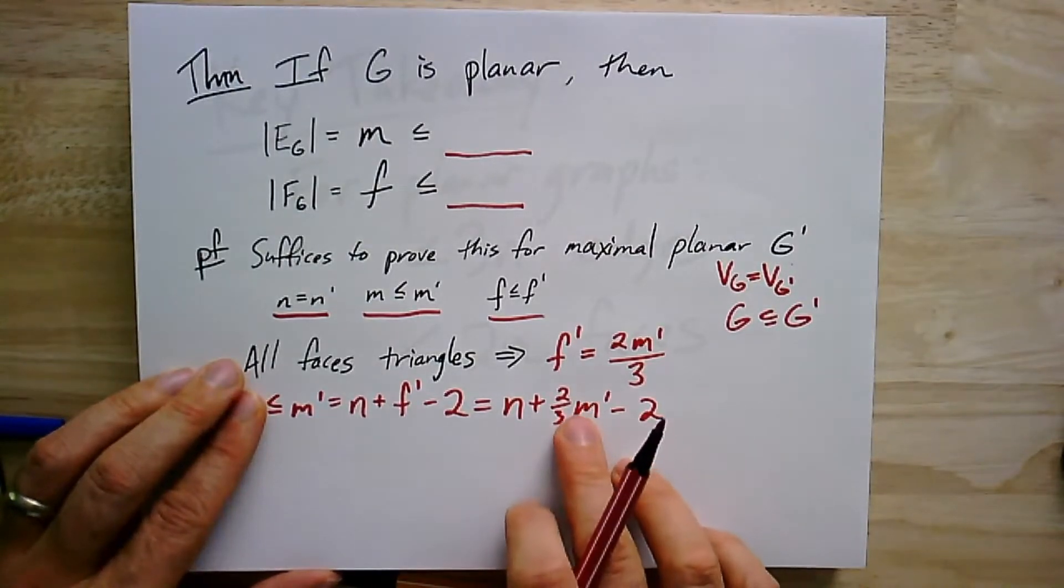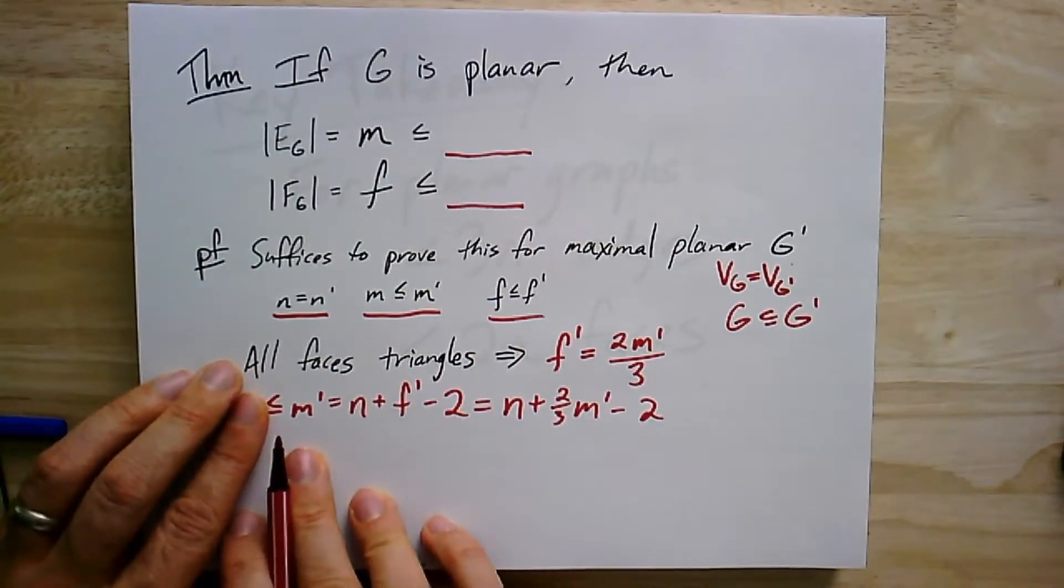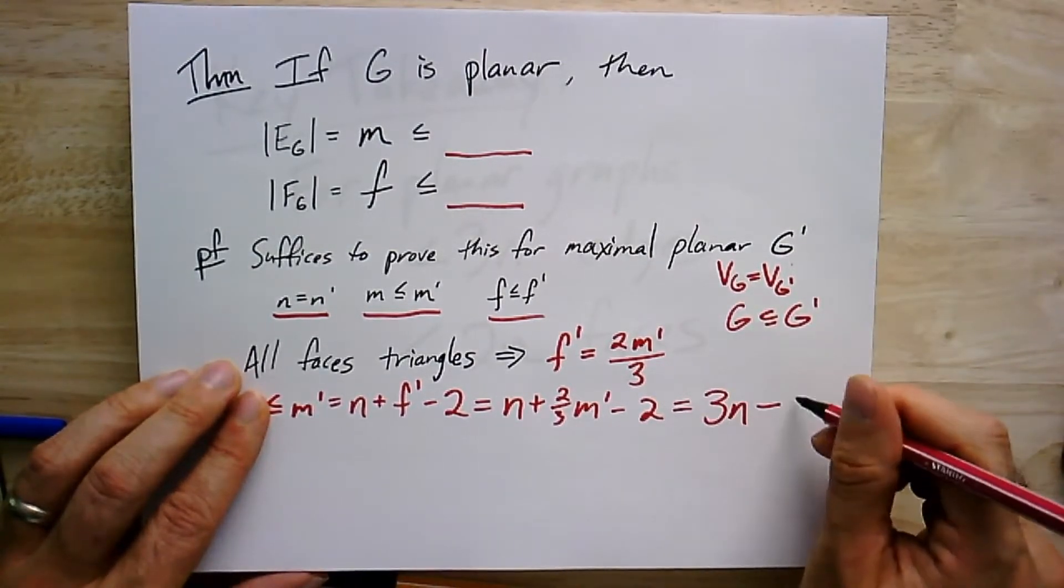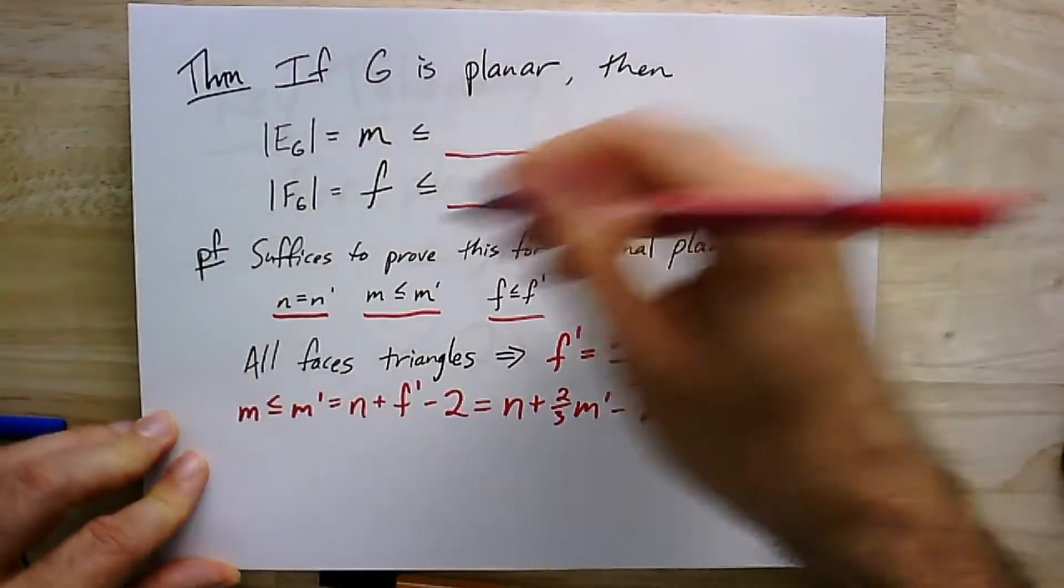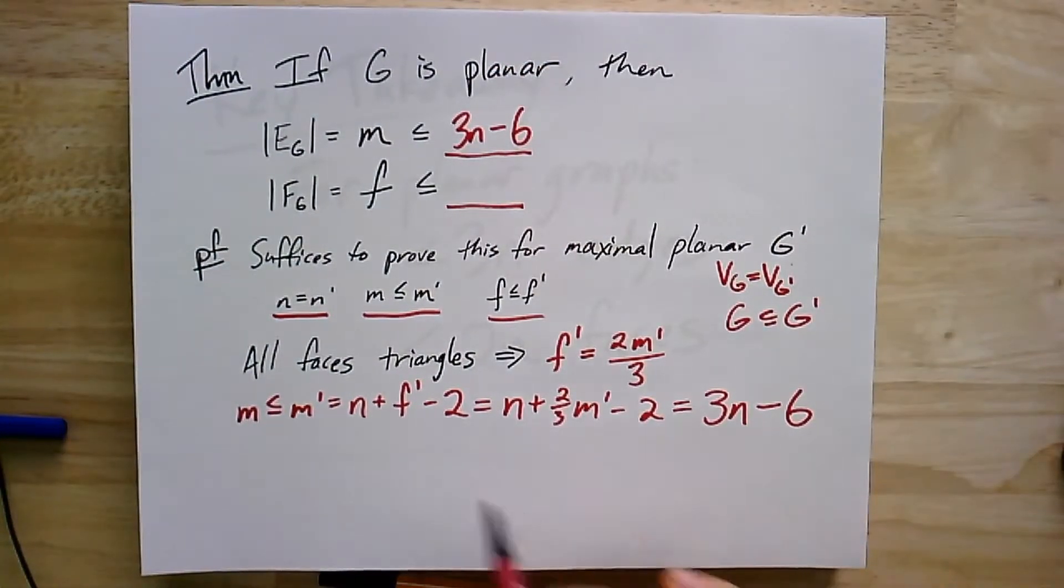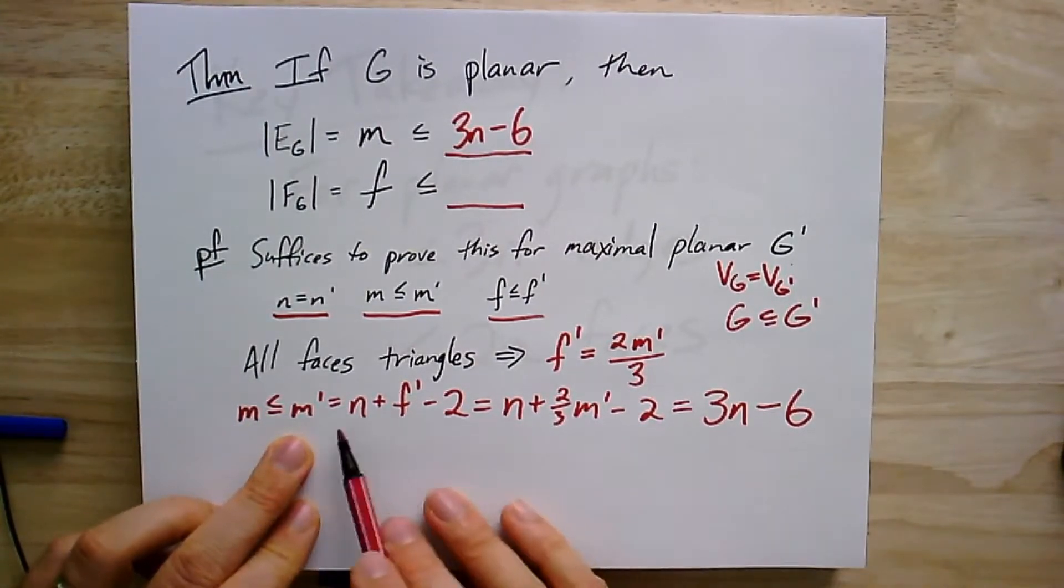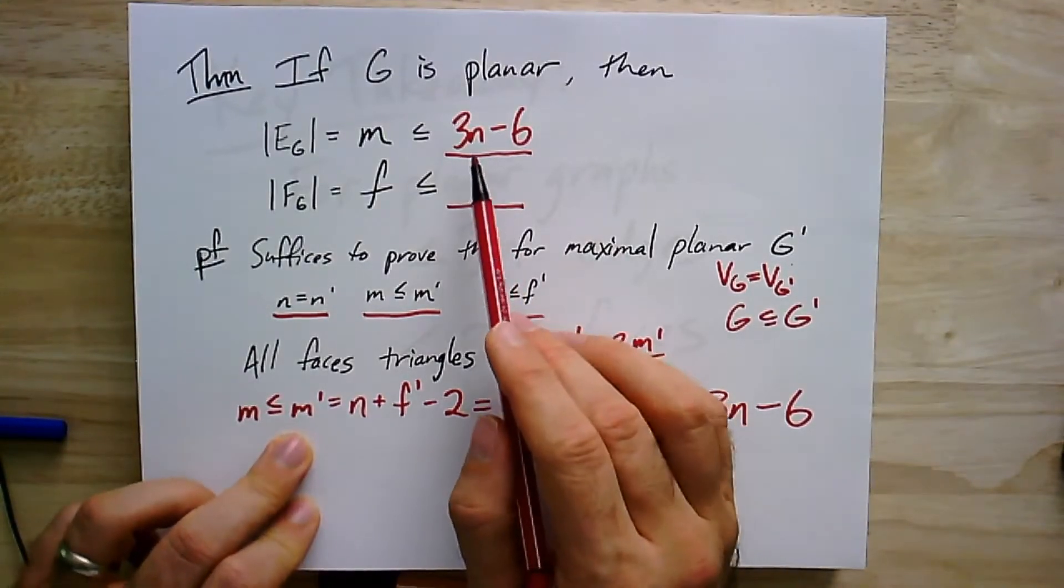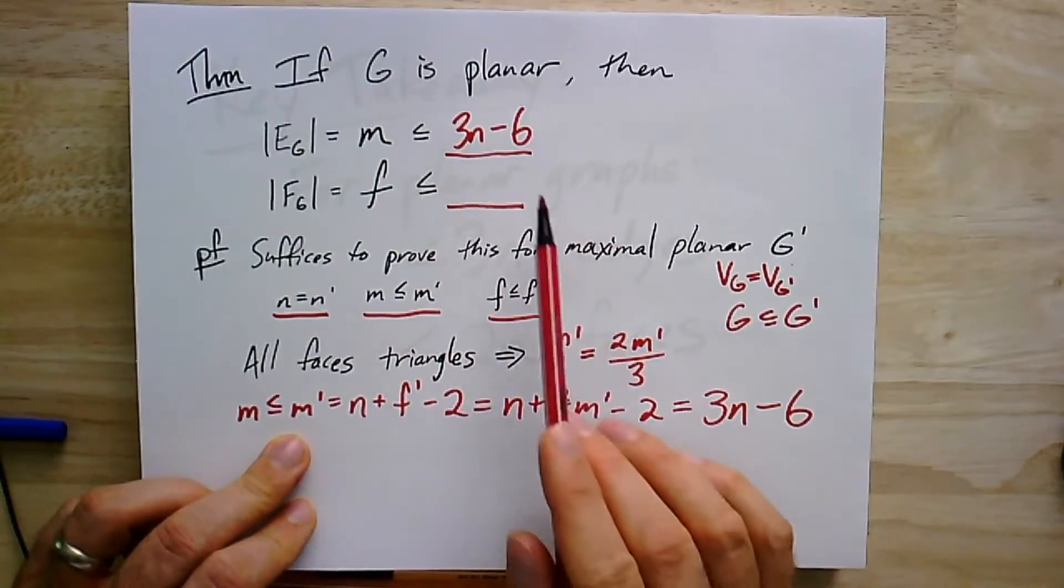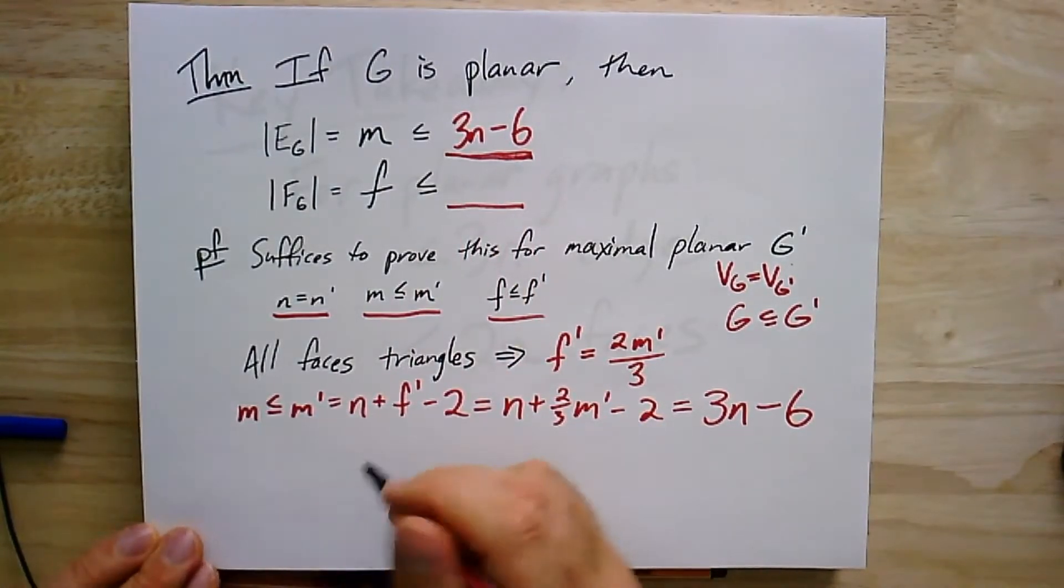So if I subtracted this from both sides and then multiply by 3/2, what do I get? I get actually, I multiply by 3 because I'll end up with 1/3 m' over here. And so I multiply by 3 and I get 3n minus 6. So I'm going to put that in as my bound, 3n minus 6. What's neat here is that you'll notice the, after I switch to the maximal planar graph, these are equal signs. So I know that this bound is tight. Like I'm not going to be able to find a smaller bound that works for all planar graphs because for maximal planar graphs, there are in fact exactly this many edges.